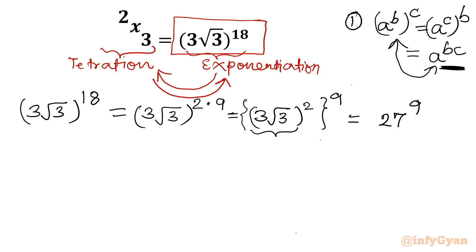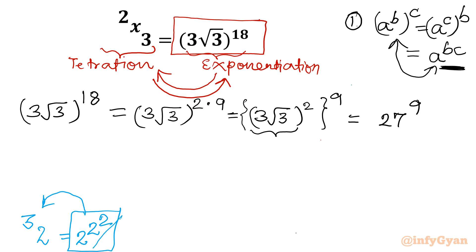However, this is still not in tetration form. For tetration, the numbers must be identical — for example, 2 superpower 3 means 2^(2^2), so the base must repeat. The count of identical numbers equals the superpower. So let me convert 27^9 into tetration form.